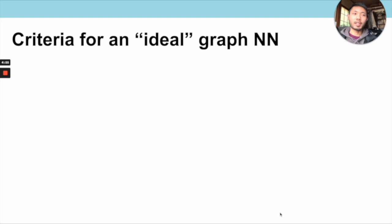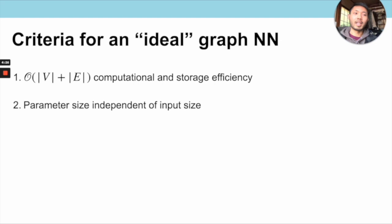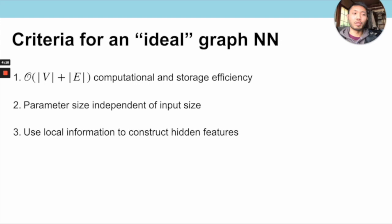We extract four criteria for an ideal graph neural network inheriting the benefits of CNNs. First, computational and storage efficiency, ideally linear in the number of nodes and edges. Second, parameter size independent of input size. Third, using only local information to hierarchically construct features, making the computational graph sparse. Fourth, the ability to use edge features in addition to node features to make more informed predictions — a property not present in CNNs but useful for general graph inputs.